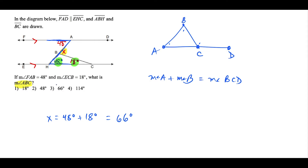And that's our solution. An alternative method would be to call the interior angle of the triangle Y, solve for Y, and then use X plus Y equals 180 degrees. Solving that way would also give you 66 degrees.